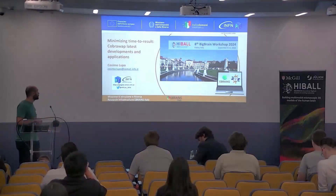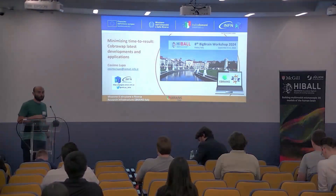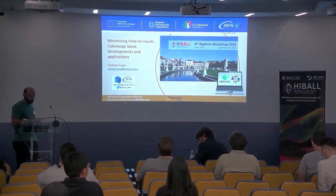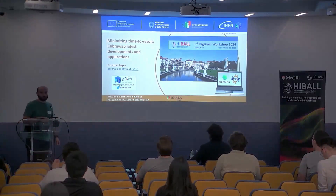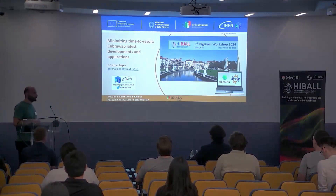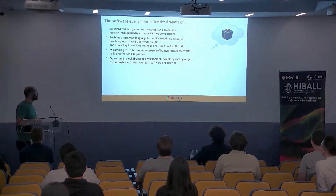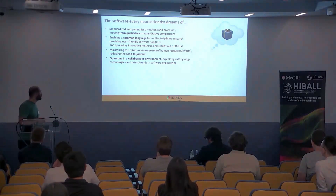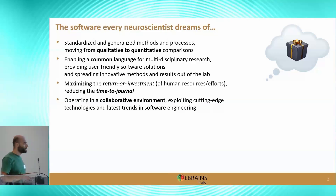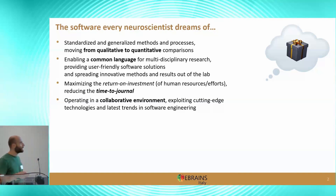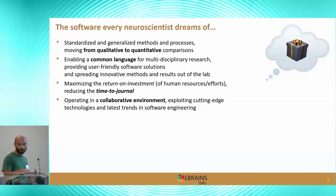Hello everyone, I'm Cosimo Lupo from the Neuroscience Group of the Italian Institute of Nuclear Physics. Today we talk about the COBRAWAP software, which is a pipeline dedicated to data analysis. Every neuroscientist, either computational or experimental, usually dreams of fantastic software that is robust, flexible, easy to use, possibly able to match different experimental data, even models, very easy to learn and use, where people can collaborate — it's like a Christmas wishlist.